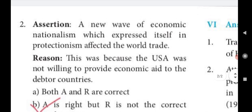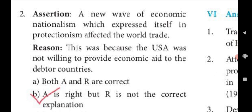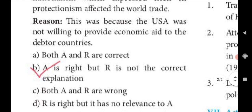Assertion: A new wave of economic nationalism, which expressed itself in protectionism, affected world trade. Reason: This was because the USA was not willing to provide economic aid to the debtor countries. Answer: B. A is right, but R is not the correct explanation.